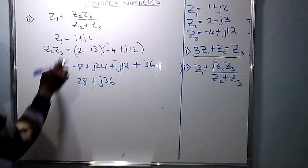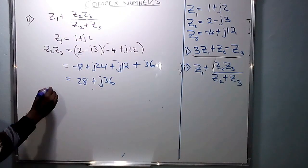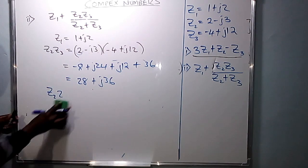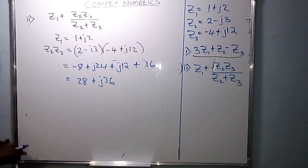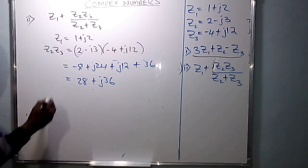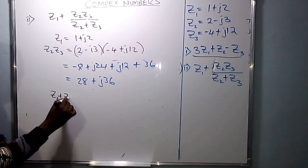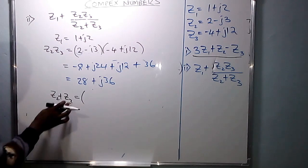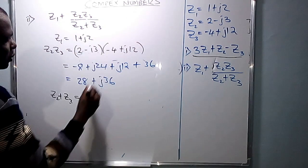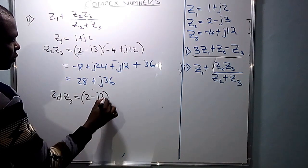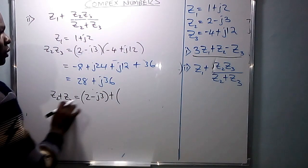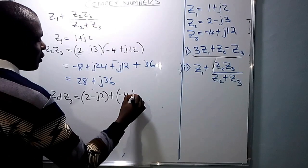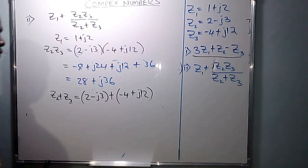Now for the denominator, we have Z2 plus Z3. Substitute the values of Z2 and Z3: where there is Z2 put 2 minus j3, then plus the value of Z3 which is negative 4 plus j12.